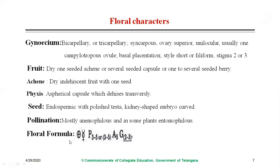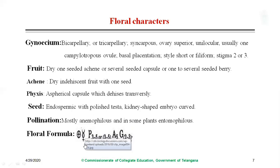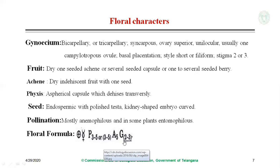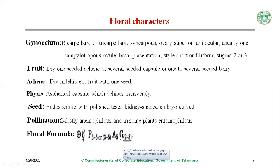The floral formula: bracteate (Br), bracteolate (Brl), actinomorphic — they are symmetrical — bisexual with both androecium and gynoecium present. Perianth usually has three to five tepals. Androecium usually has five stamens. Gynoecium usually has two carpels — bicarpellary, rarely three — and the flower is hypogynous, so a hyphen is placed below the gynoecium.